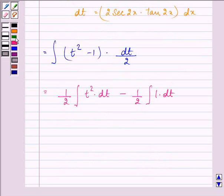So we have the answer as 1 by 2 into t cube divided by 3 minus 1 by 2 into integral of t plus c.